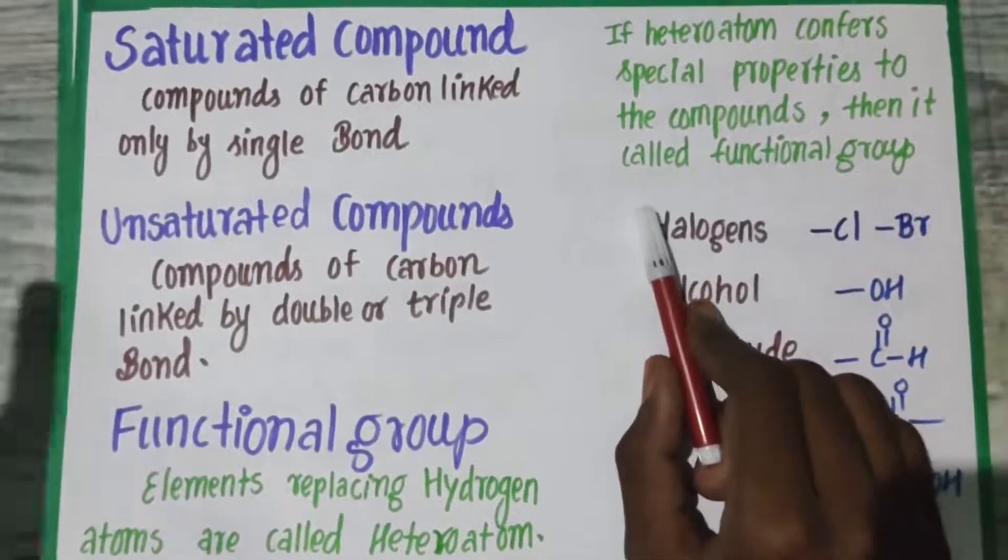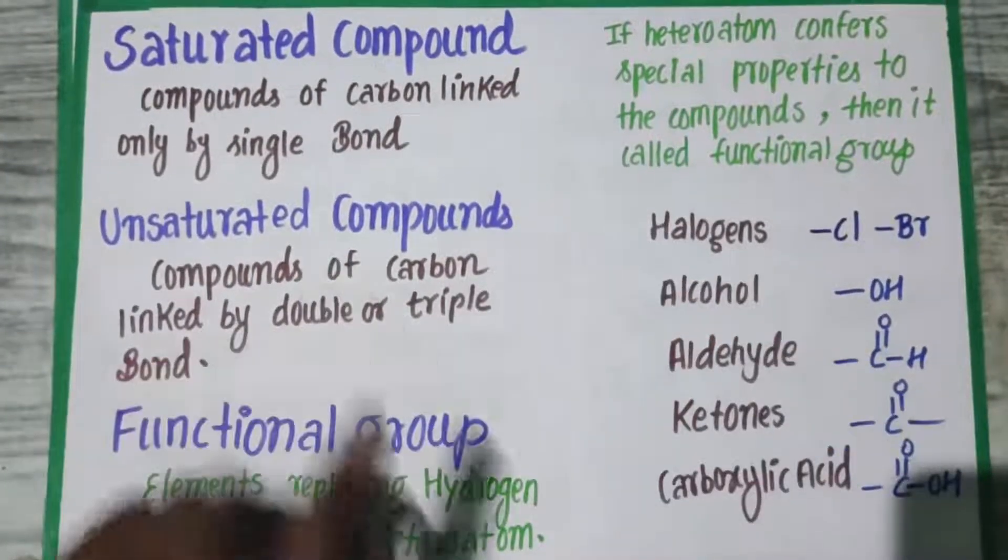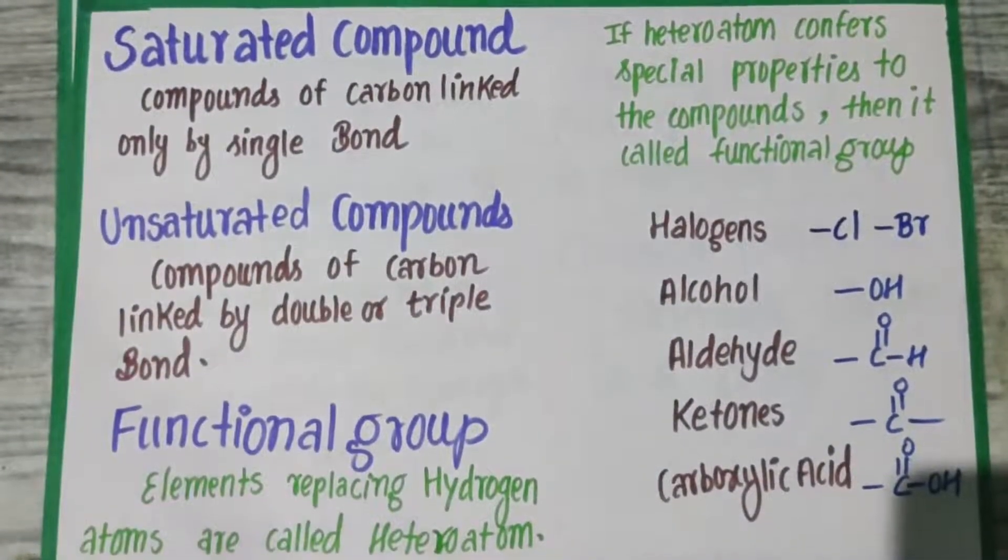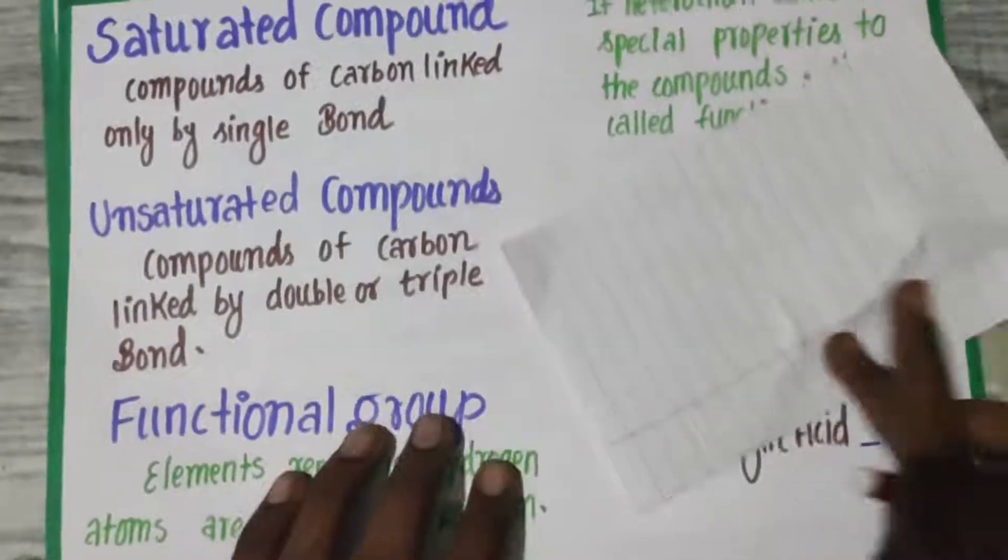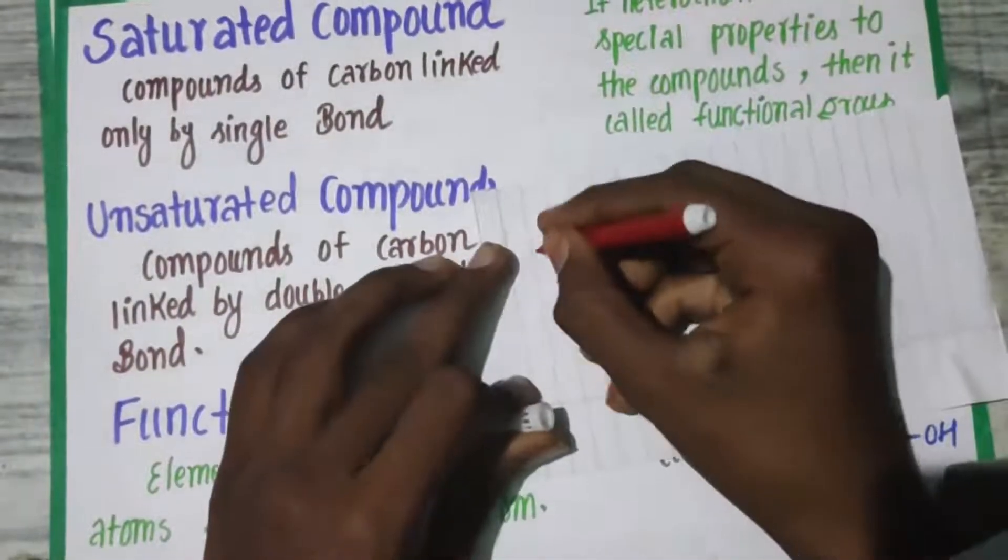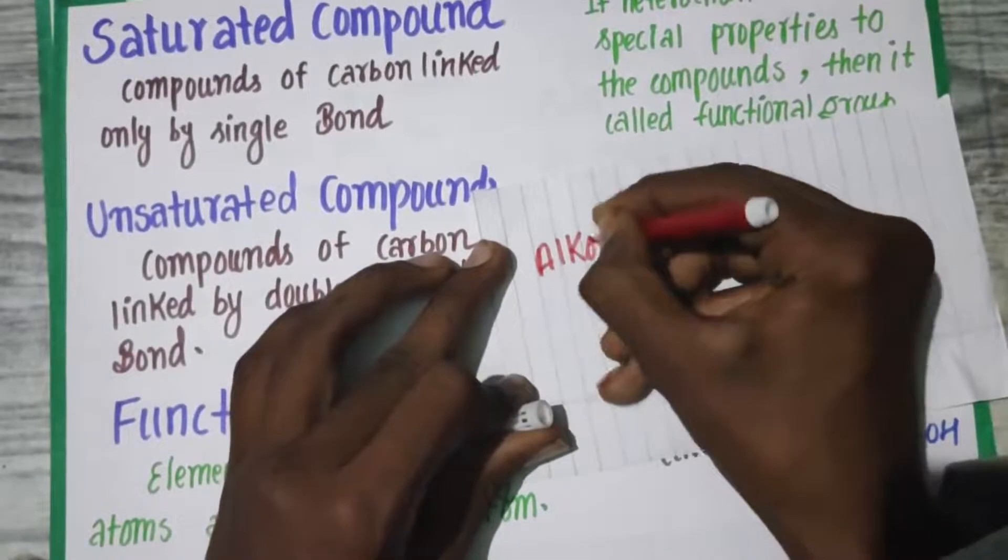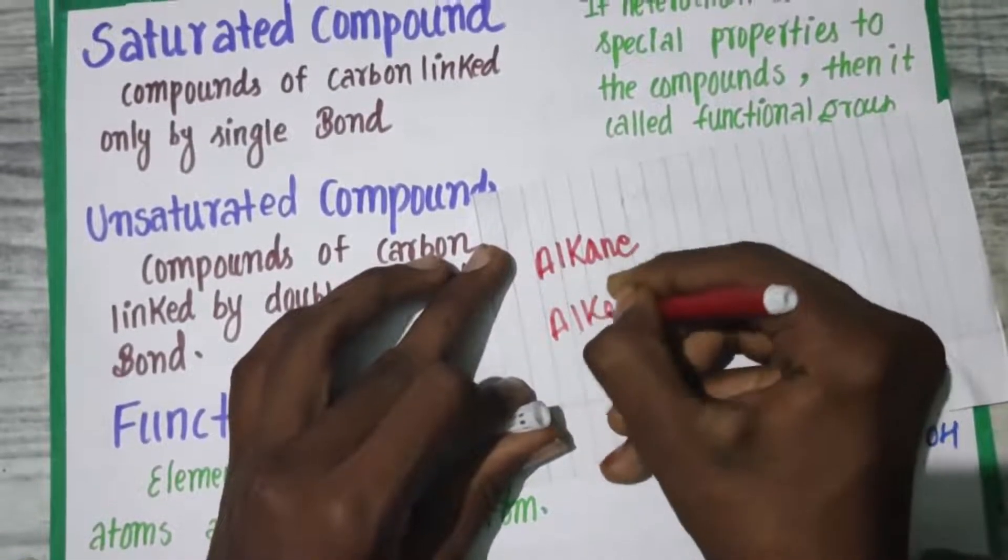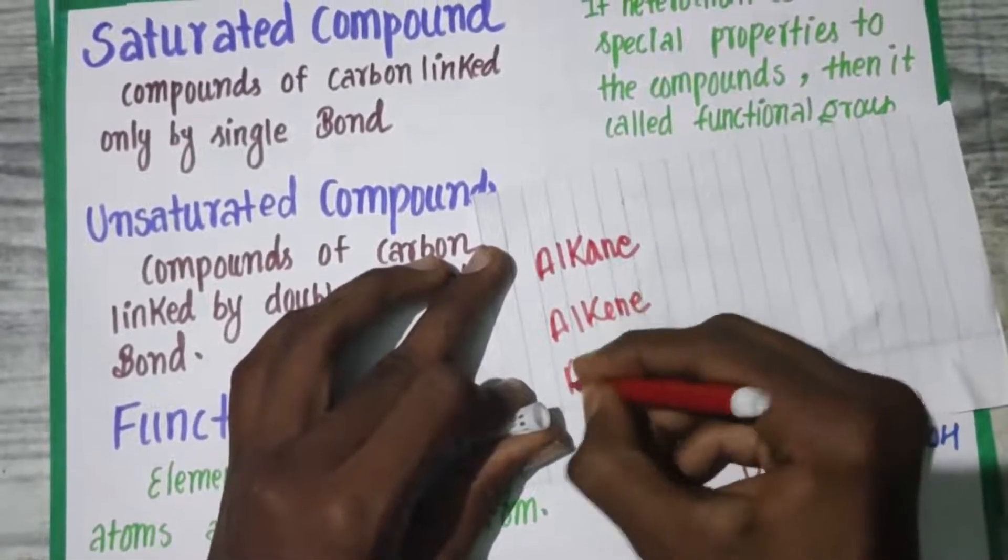Saturated compounds with single bonds are called alkanes. If there is a double bond, you call it alkene. And if there is a triple bond, it's called alkyne. Remember these three things.